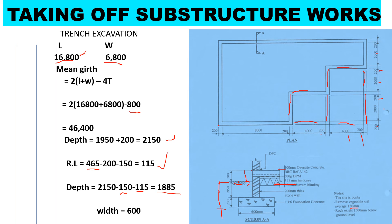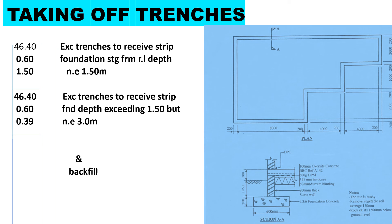The 1885mm depth is done in stages. Excavation for trenches is staged by depth: the first stage is not exceeding 1500mm, and the second stage is 1500mm to 3000mm. We book the first stage as 46.40 × 0.60 × 1.50: excavate trenches to receive strip foundation from reduced level, depth not exceeding 1.5m. The second stage: 46.40 × 0.60 × 0.385: depth exceeding 1.5m but not exceeding 3.0m. Then we backfill.